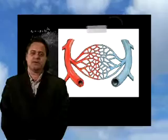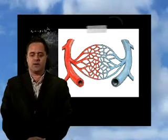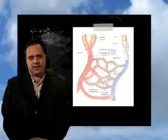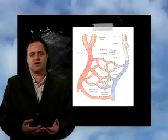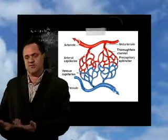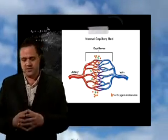This is a microcirculation unit. The red side is where the blood cells are coming from the heart carrying oxygen, and the blue side is where the oxygen has been removed from the cells and the red blood cells are going back to the lungs to drop off carbon dioxide, pick up oxygen, and come around again to perfuse tissue.